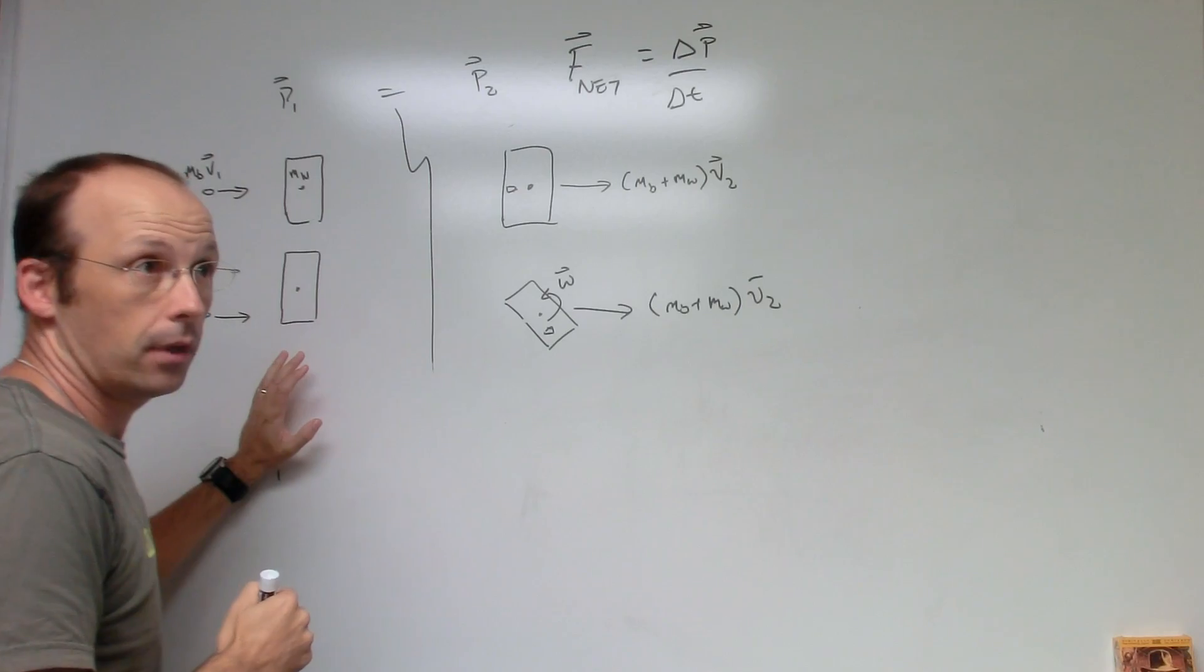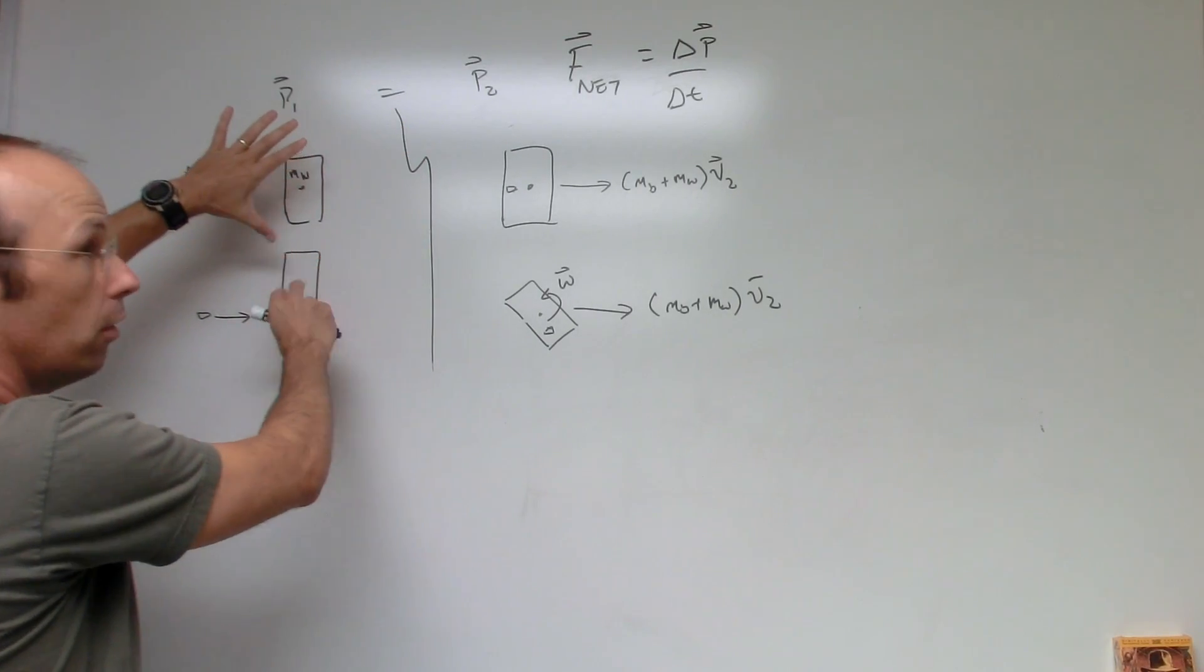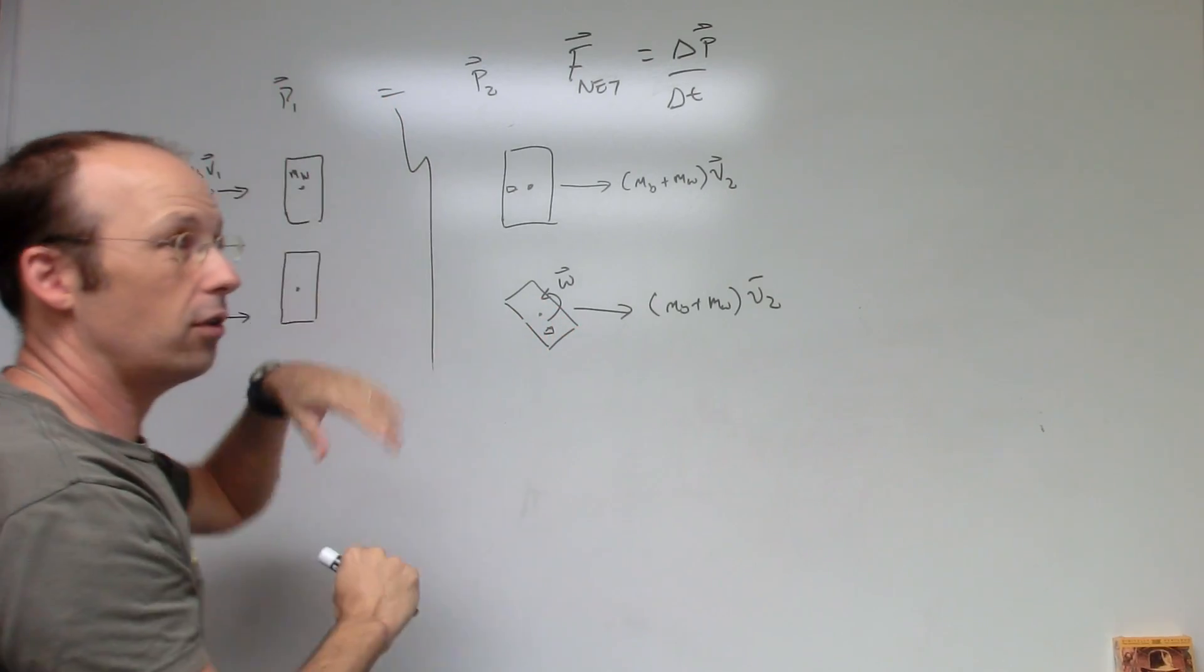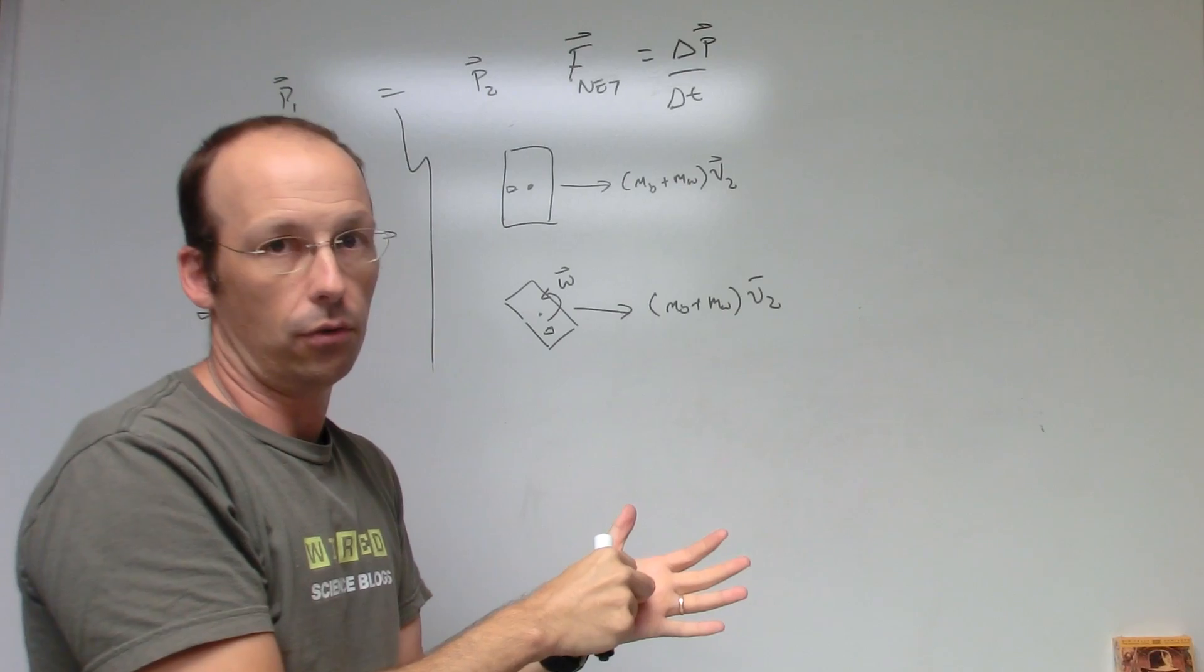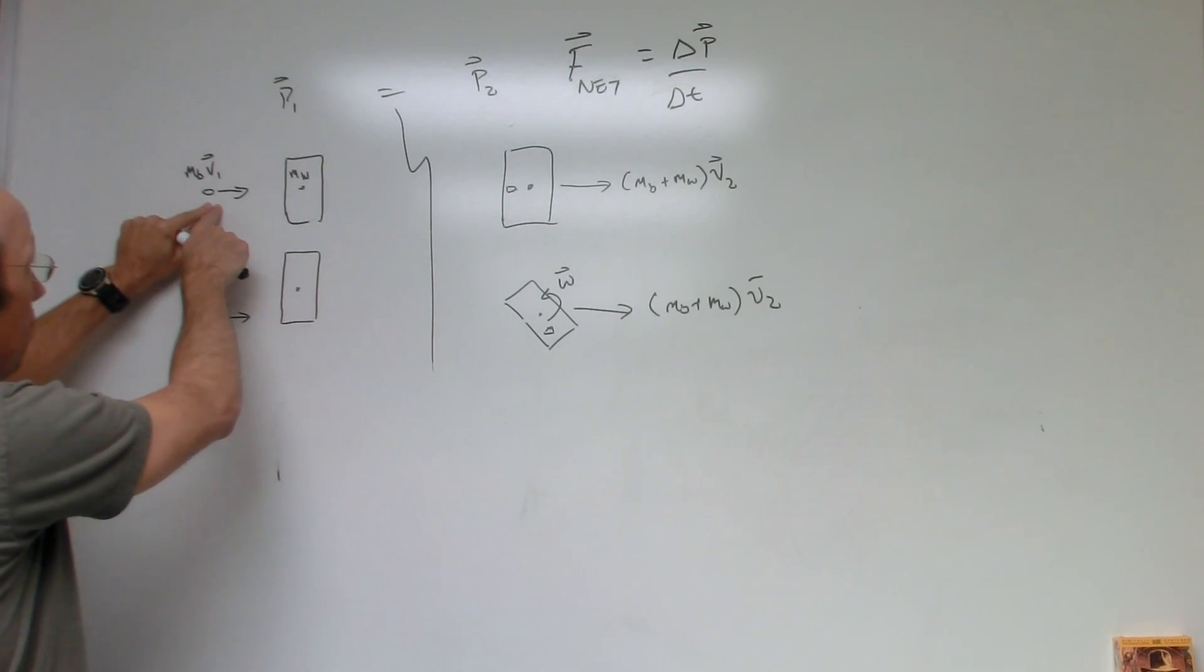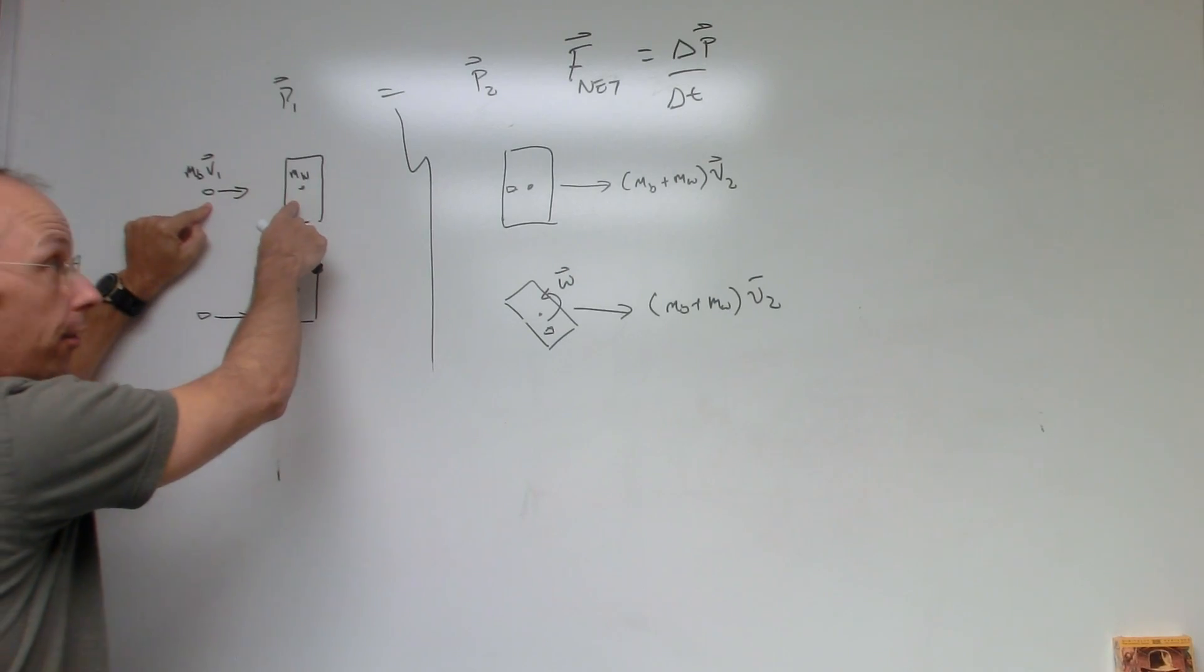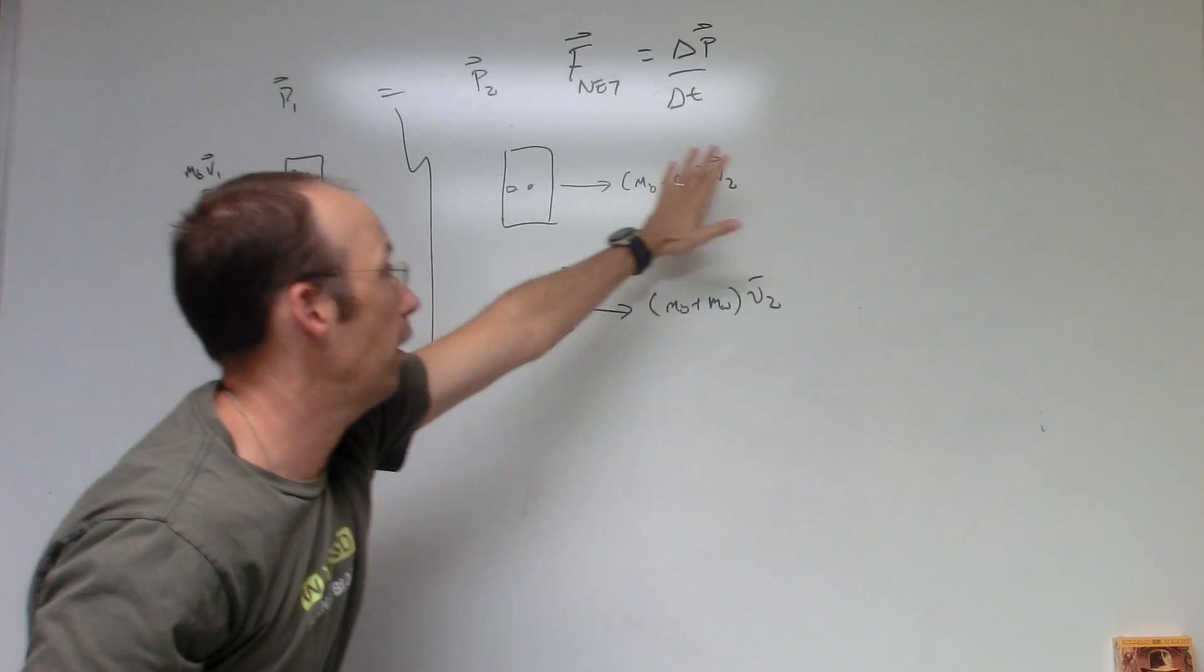First, why are they the same speed after they hit? So I've changed the problem a little bit. Instead of going up, these are two blocks on ice. So I don't have to worry about how high do they go. I just want to know how fast they're going after they get hit. This is after.